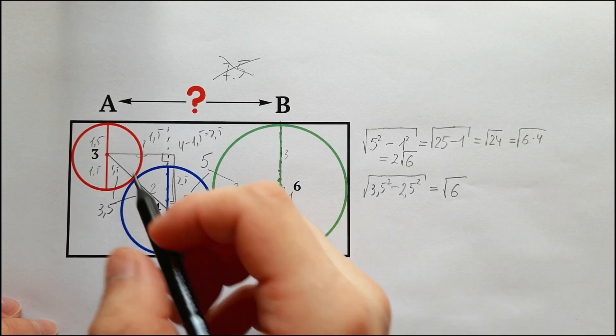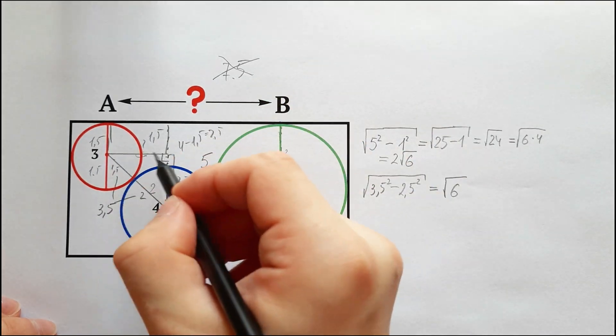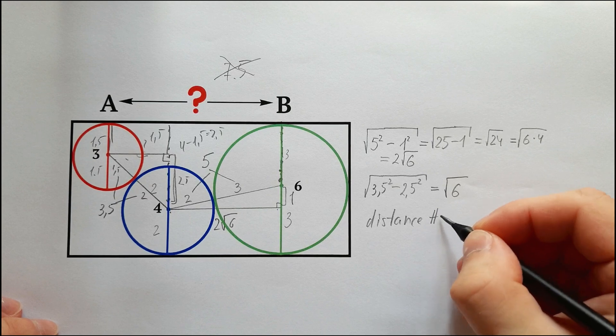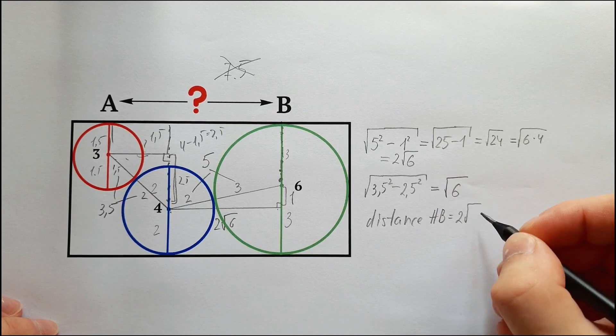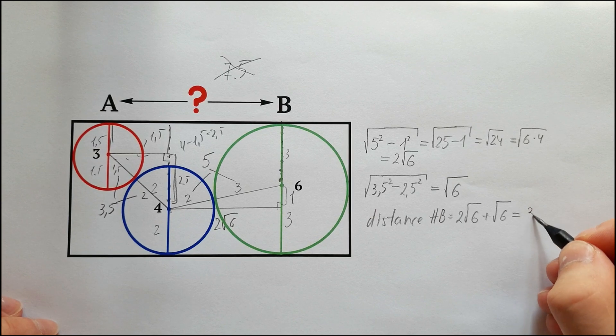So we just found the second part of the distance AB. The distance AB is equal to the square root of 6 plus 2 square root of 6, or it's simply 3√6. That is our final answer.